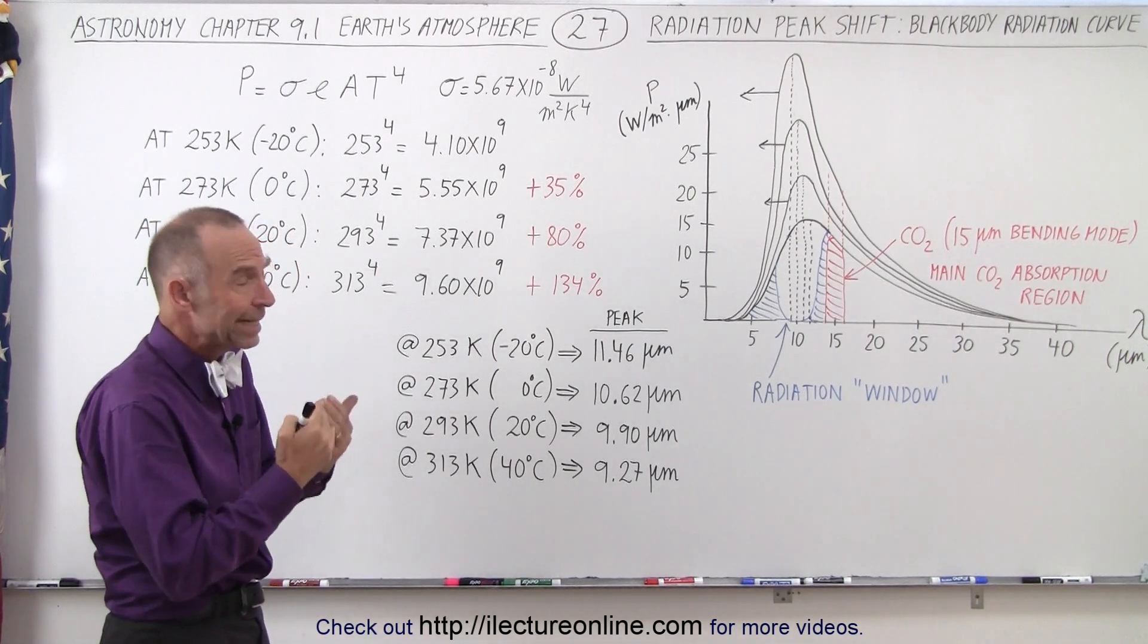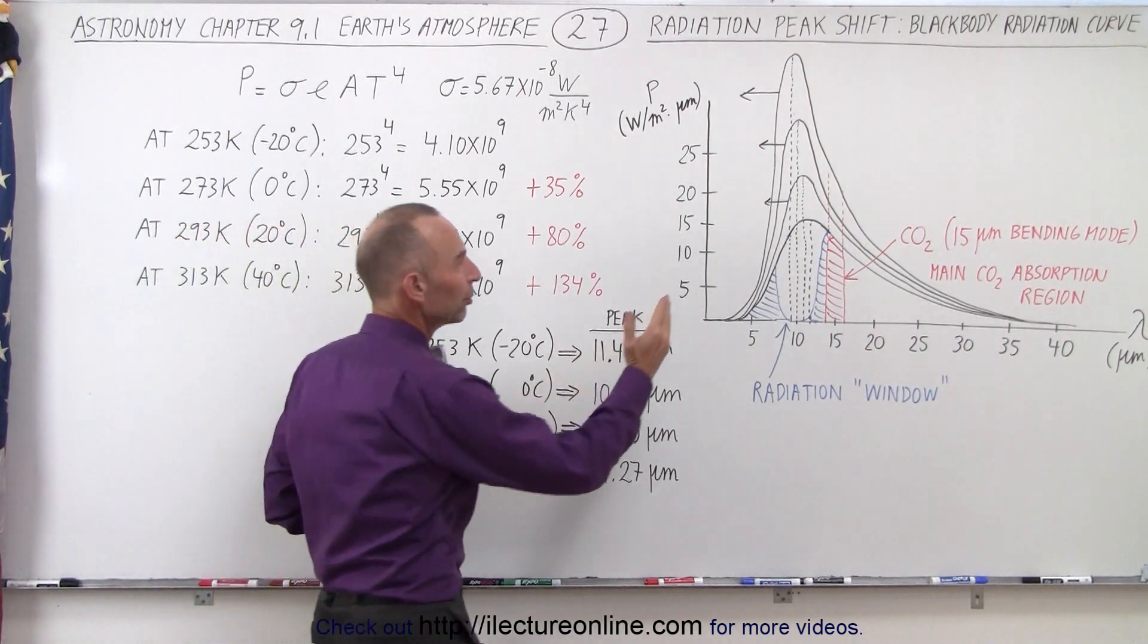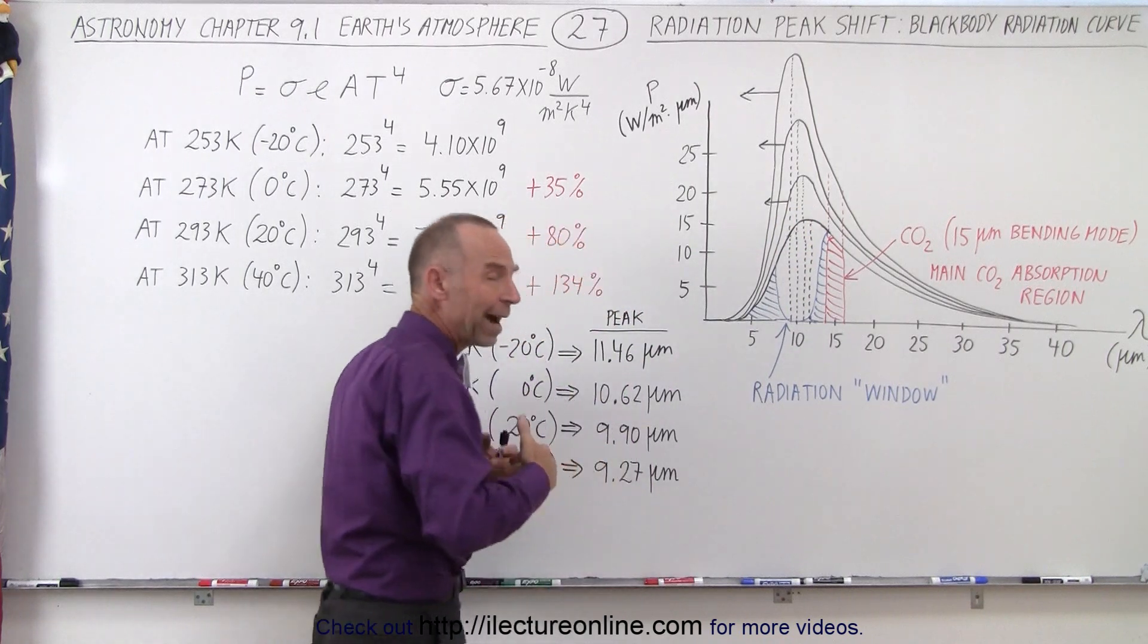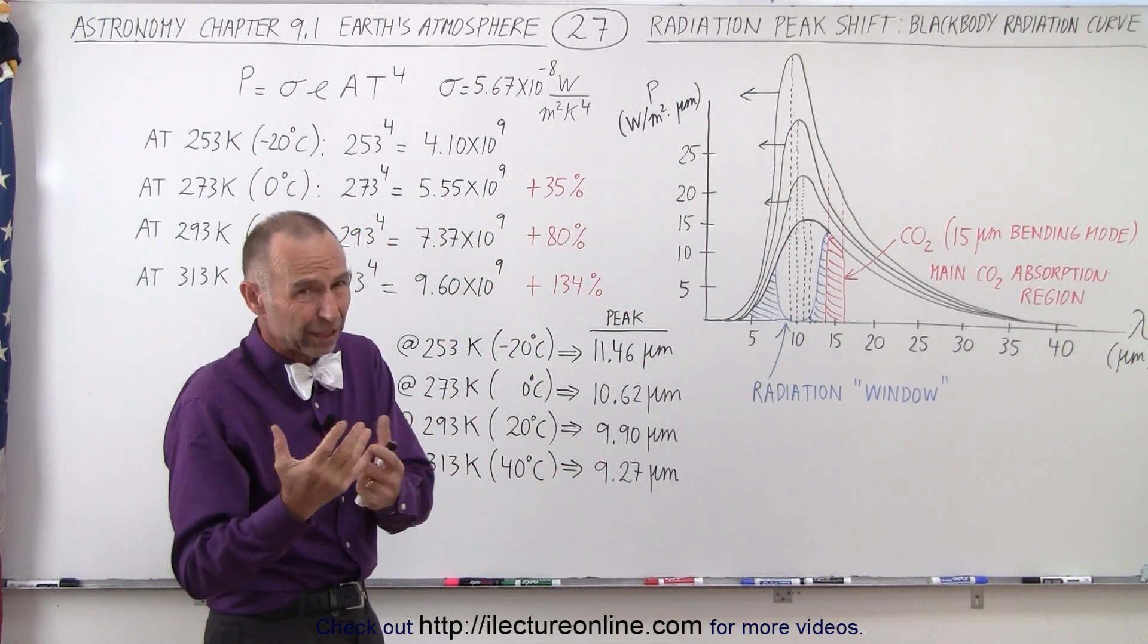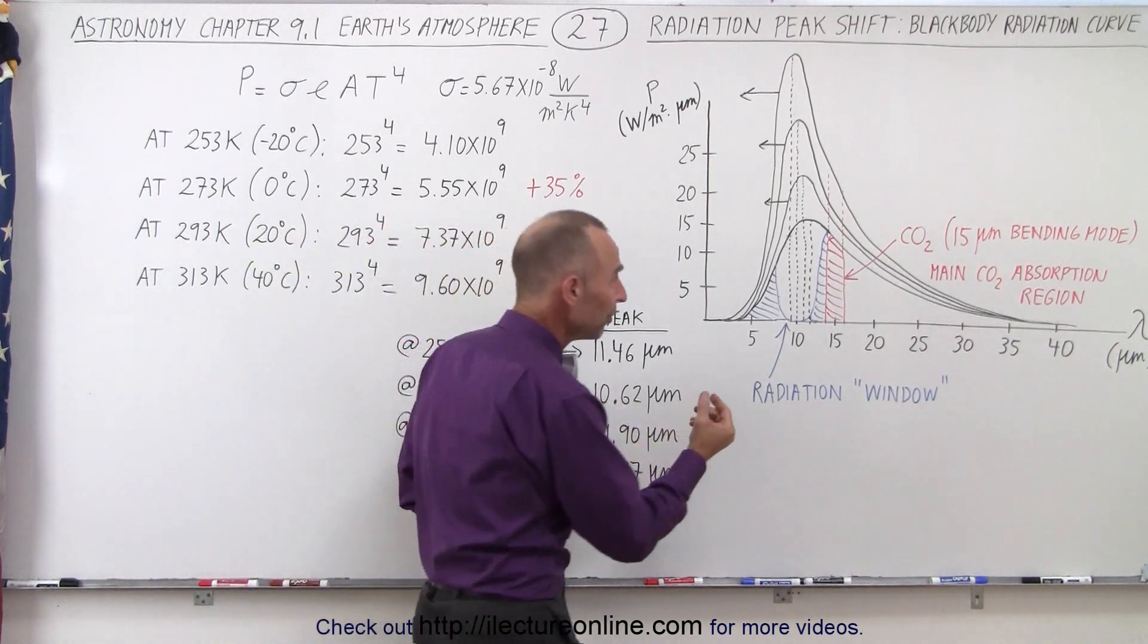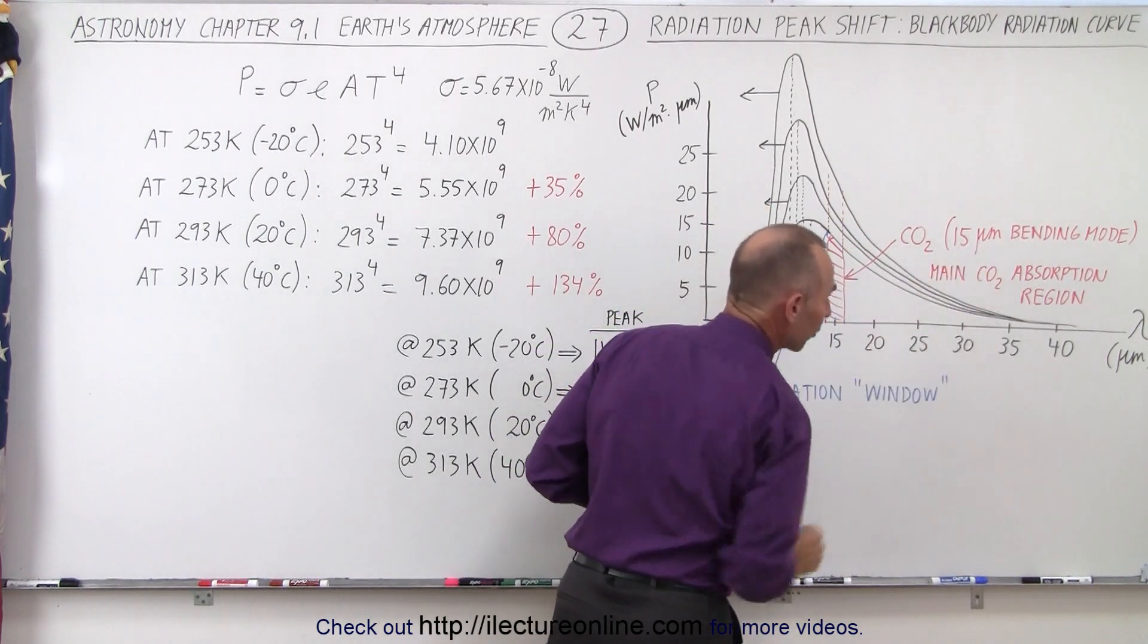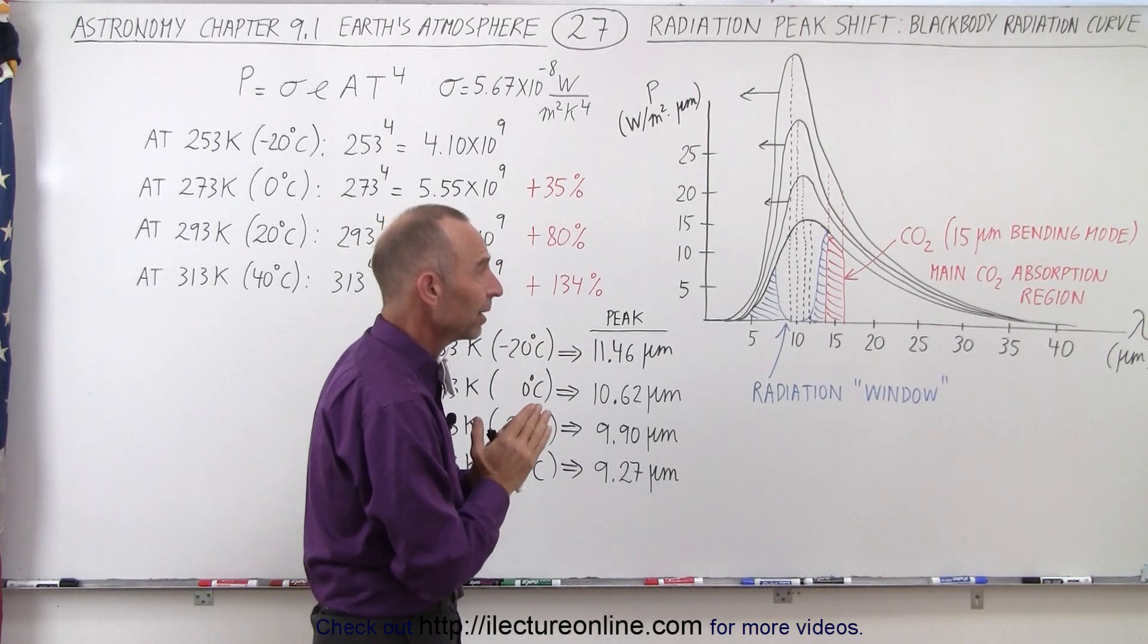When we take a look at the blackbody radiation curve, we realize as the temperature increases, the peak of the radiation curve shifts to the left, to smaller wavelengths, to higher frequencies. And what that does, well actually it does two things. The first thing is you can see here where the absorption band is for carbon dioxide for the 15 micrometer bending mode, the most significant absorption band of carbon dioxide.